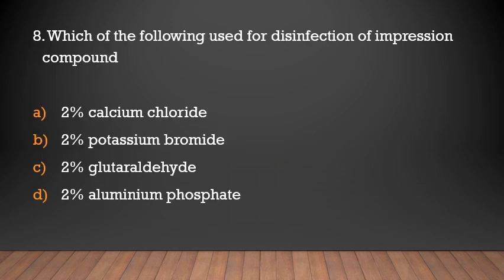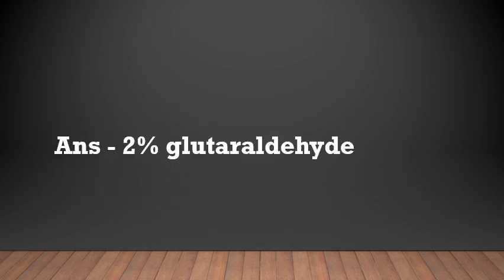Which of the following is used for disinfection of impression compound? Options: 2% calcium chloride, 2% potassium bromide, 2% glutaraldehyde, 2% aluminum phosphate. Answer: 2% glutaraldehyde.